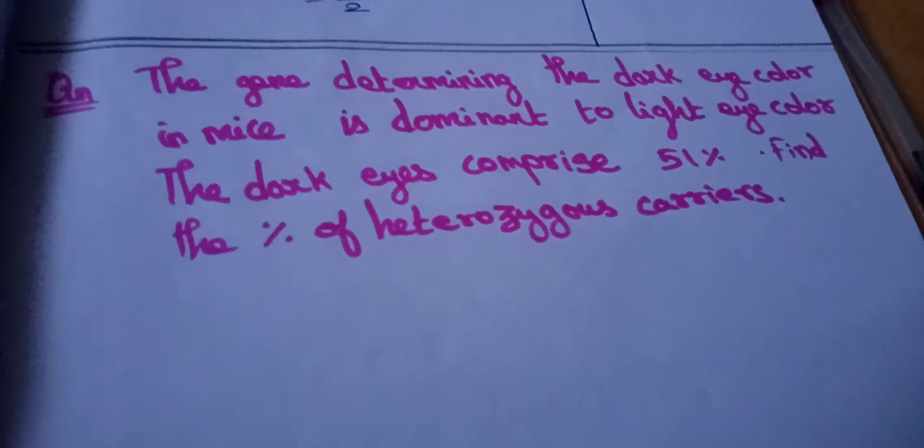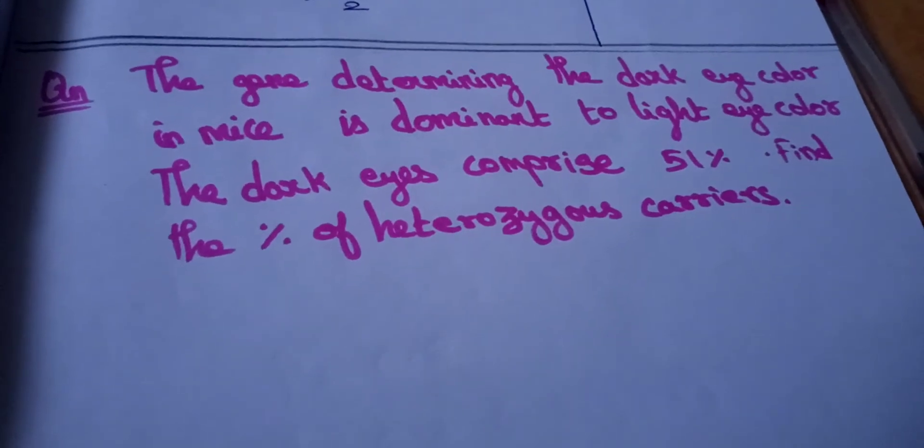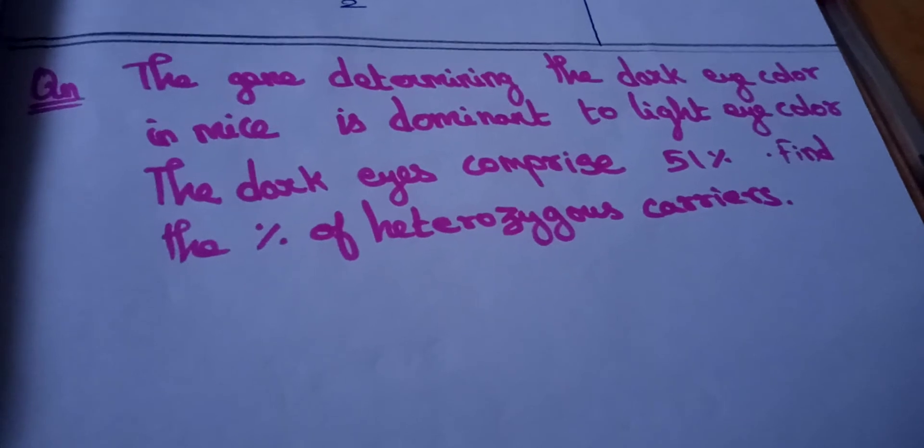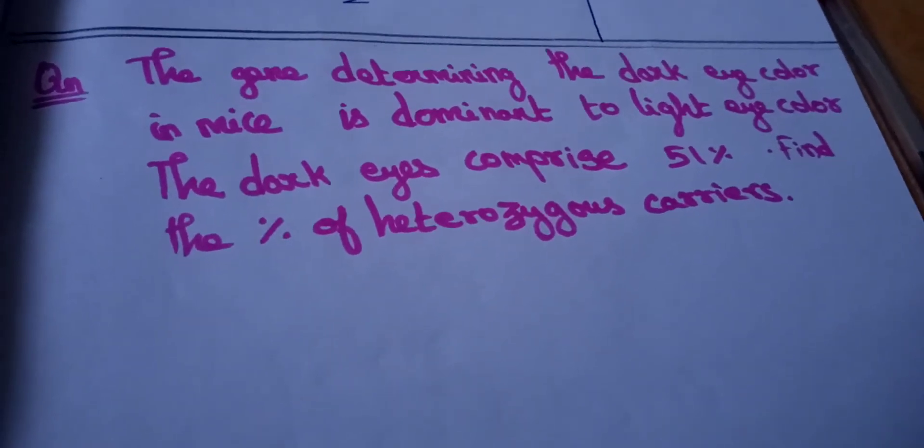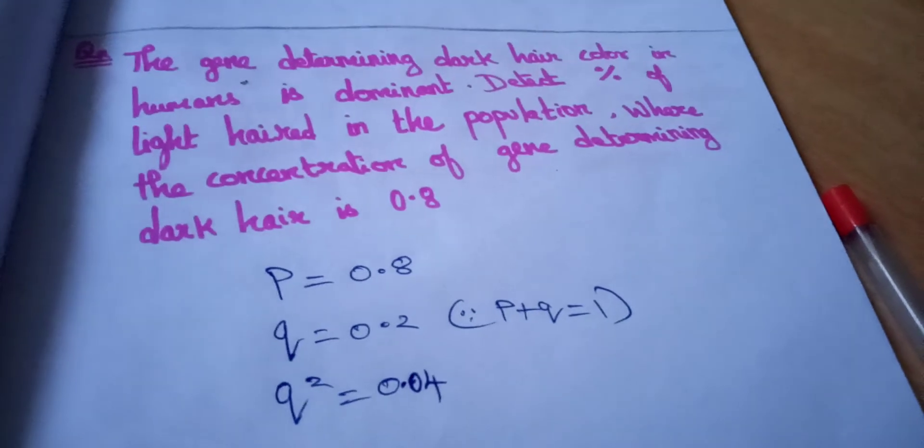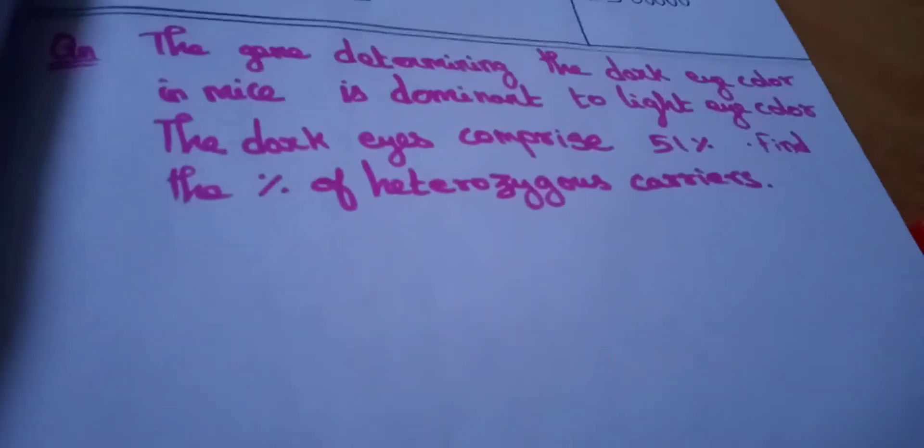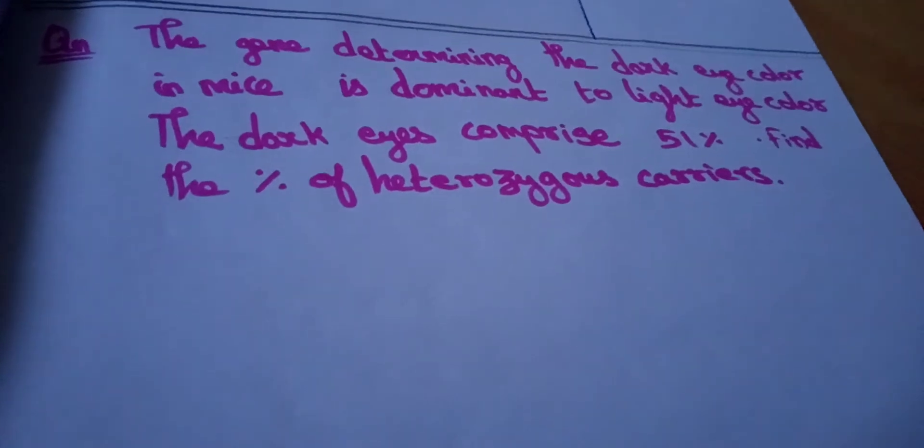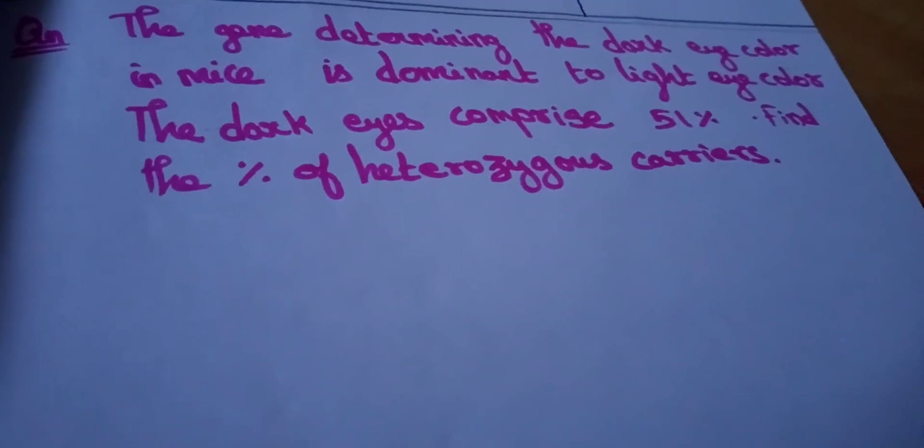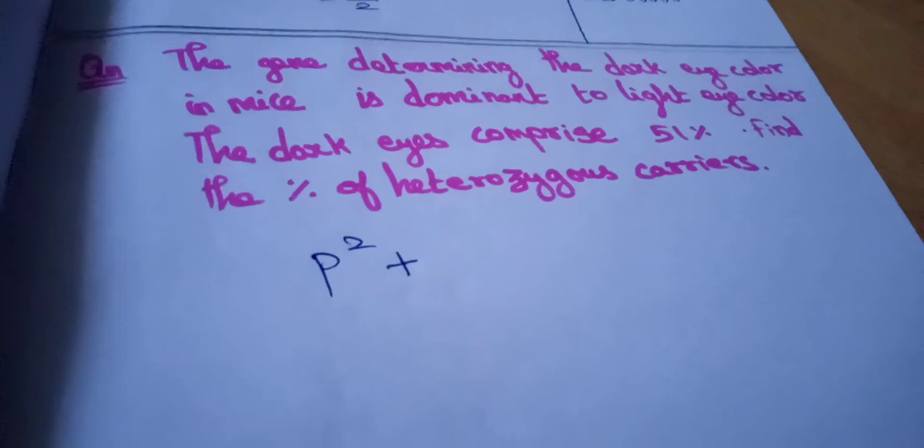In our next question, we have genes determining that dark eye color in mice is dominant to light eye color. The dark eyes comprise 51%. Find the percentage of heterozygous carriers. The dark eyed mice are 51%, these are light eyed ones. We have to find heterozygous carriers. They are speaking about 51% mice population, so these are also people, so we should take square. Dark eyes, which means P square, the homozygous one, and the heterozygous also we have to take into account.